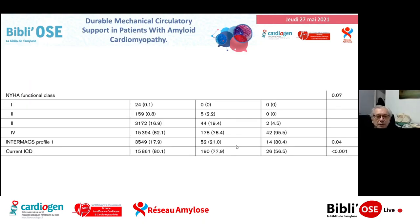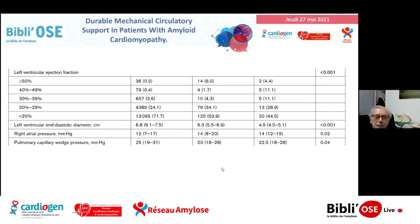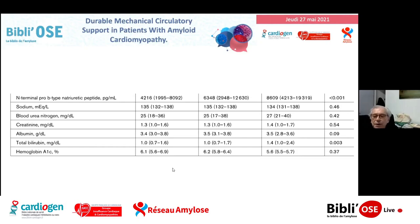Les patients étaient naturellement sévères. Il y avait un peu plus de profil INTERMACS 1, c'est-à-dire en gros du choc cardiogénique, en pourcentage dans les cardiopathies amyloïdes que dans les cardiomyopathies dilatées. Ils avaient beaucoup d'ICD pour les deux premières catégories, beaucoup moins dans les cardiopathies amyloïdes. La fraction d'éjection était pratiquement normale dans les cardiopathies amyloïdes, et surtout, le diamètre ventriculaire était normal versus ce qu'on observe dans les cardiomyopathies dilatées. Le NT-proBNP était en moyenne plus élevé, 4000 versus 600.